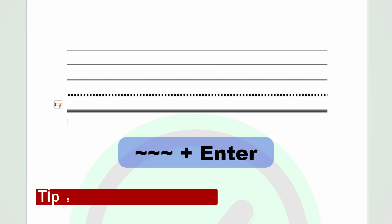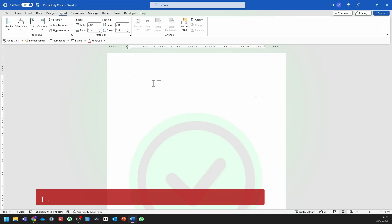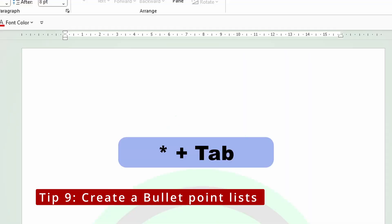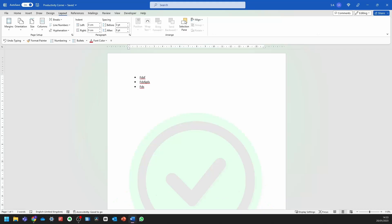And then finally, if you press the tilde sign three times, and then you press enter, it should create a wavy line. You can create bullet points using keyboard shortcuts. If you press the star sign, and then you press tab, it should create a bullet point just like this.